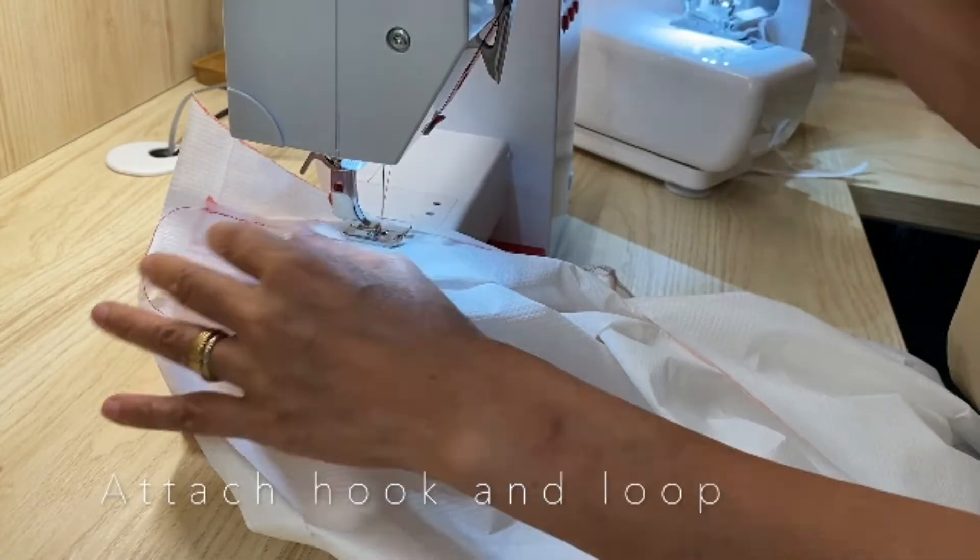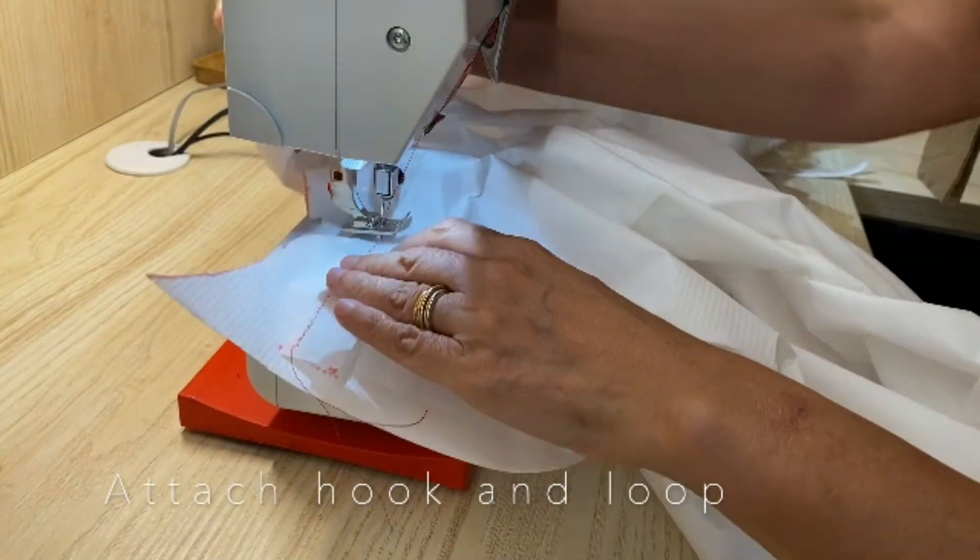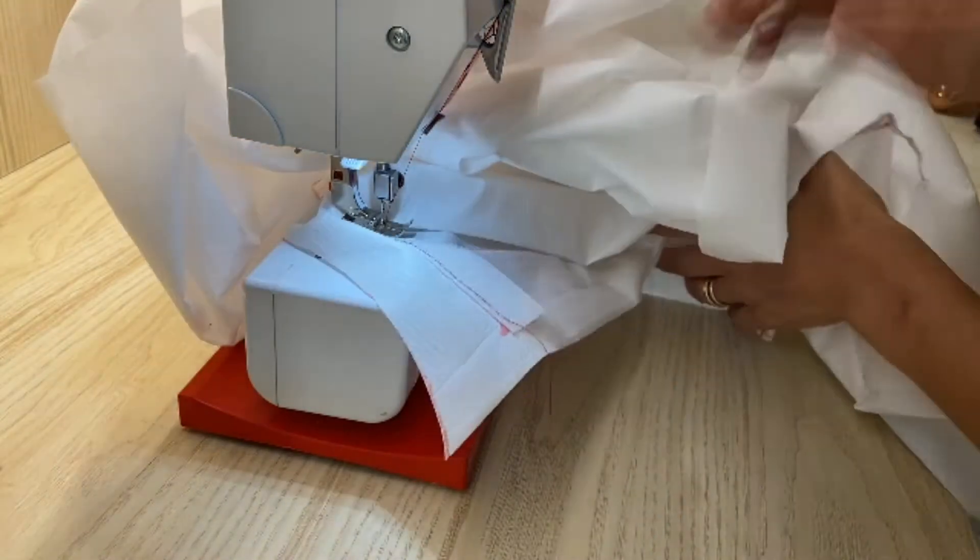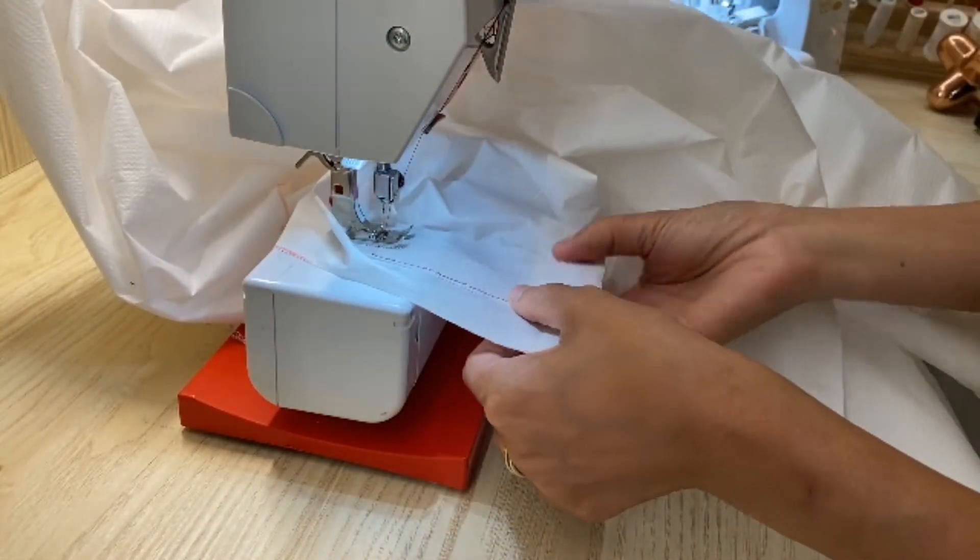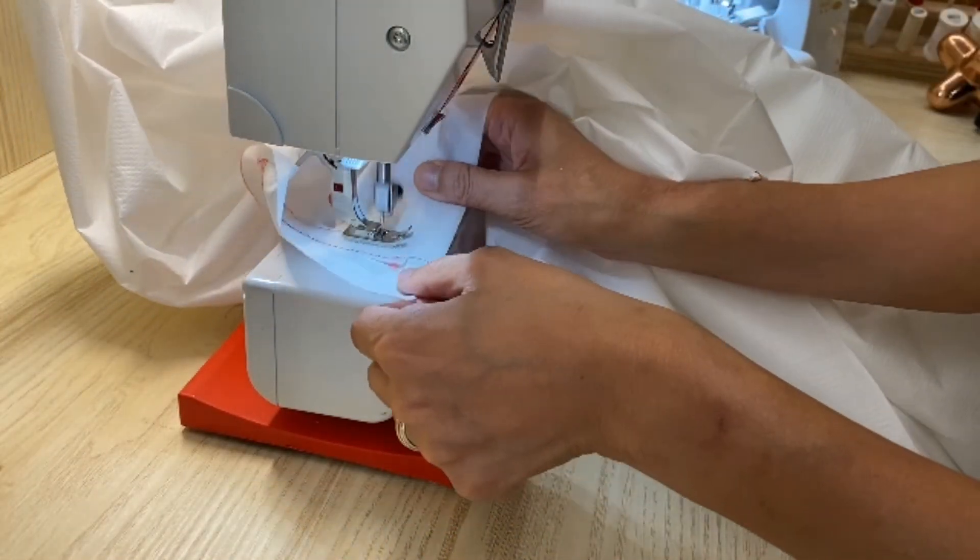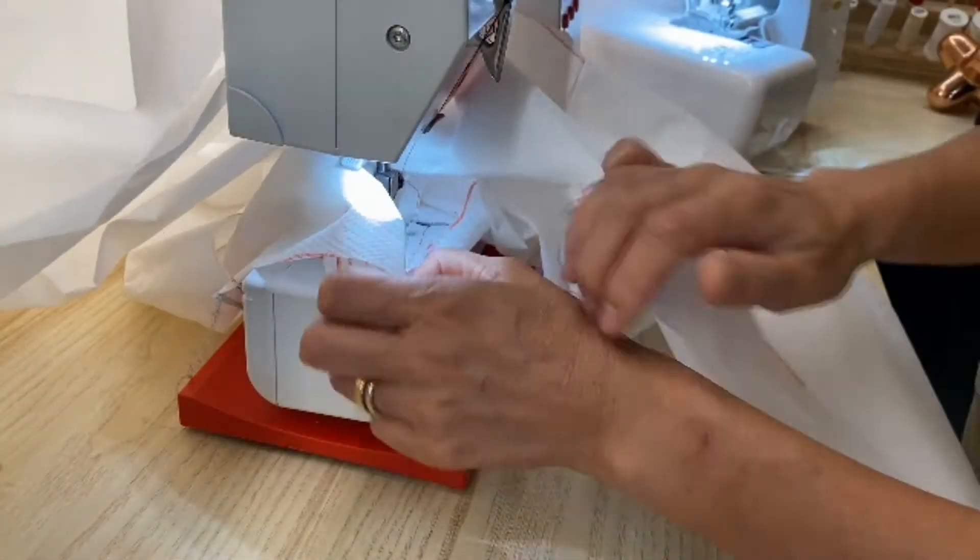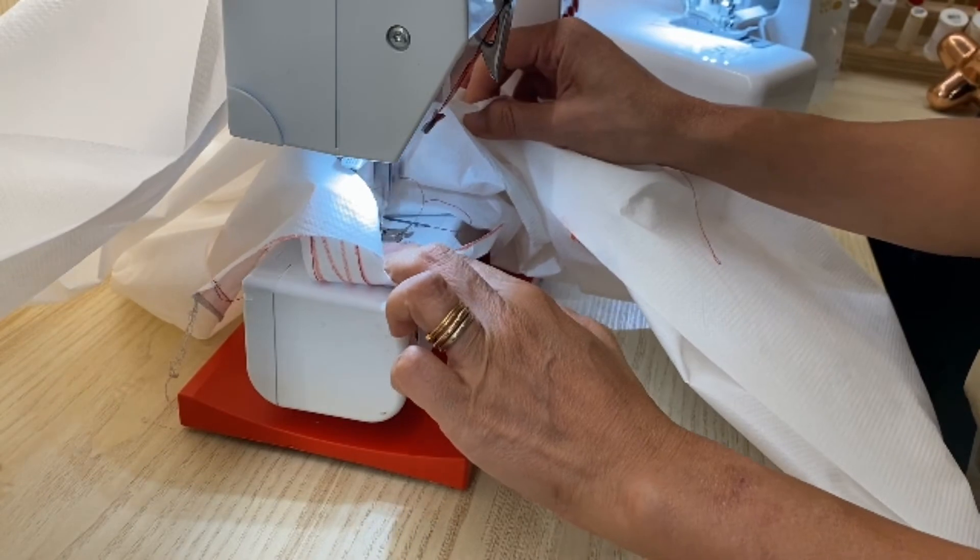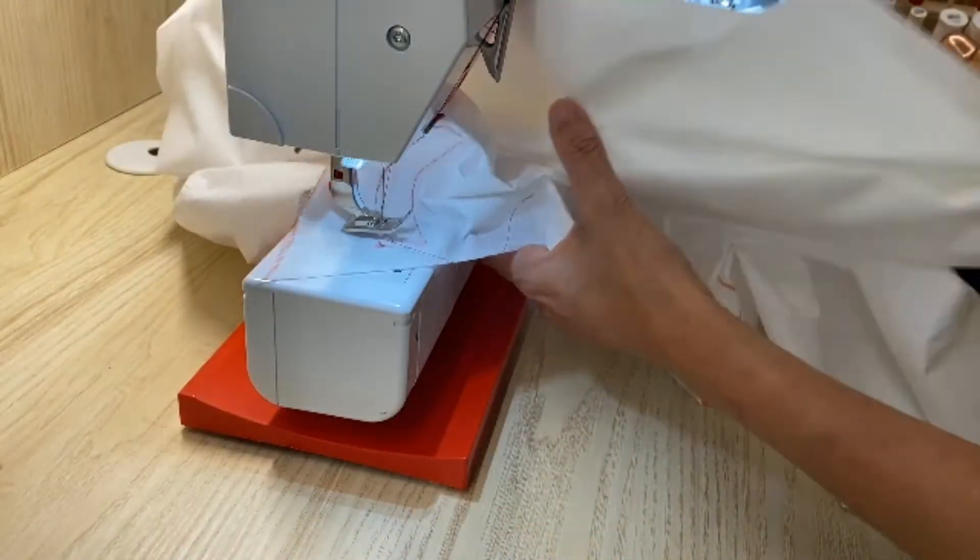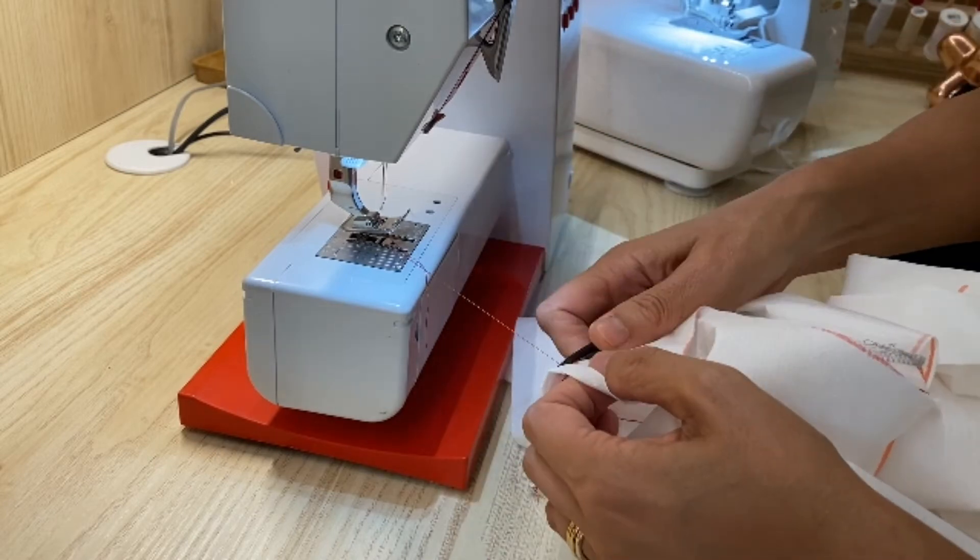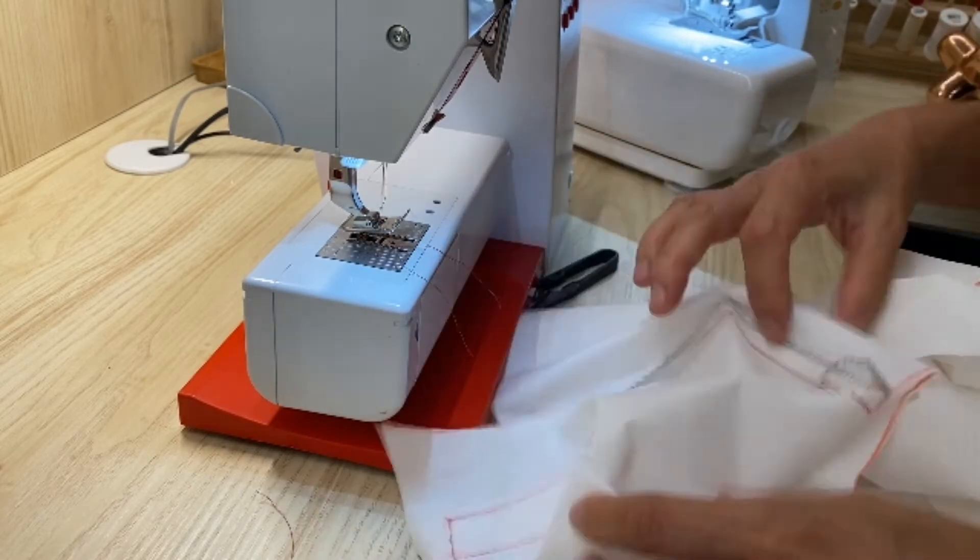Now we're going to attach the hook and loop. So again, I mentioned before, you may have the adhesive hook and loop, so that will just stick to the fabric right away, or you may have to sew it. So just sew around the edges of the strip to make sure that it's secure. Clip those extra threads as you go along.